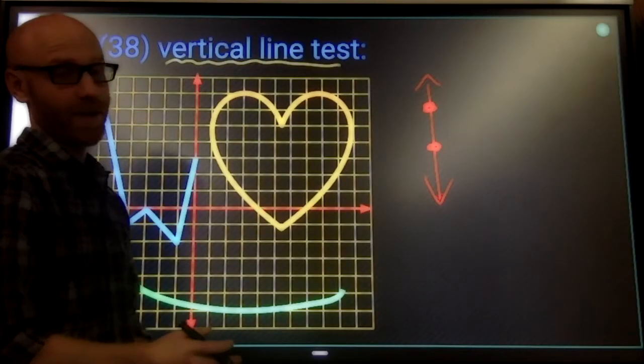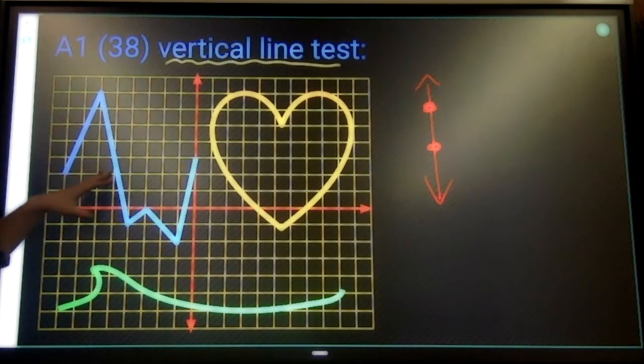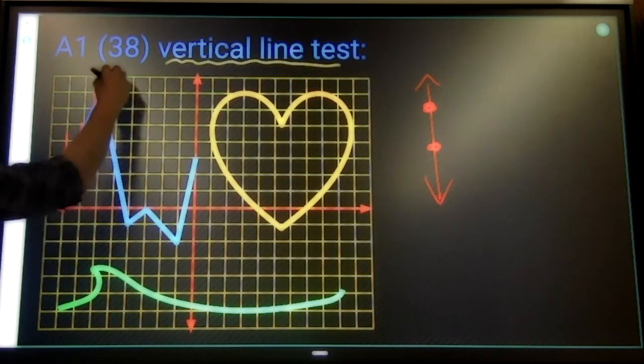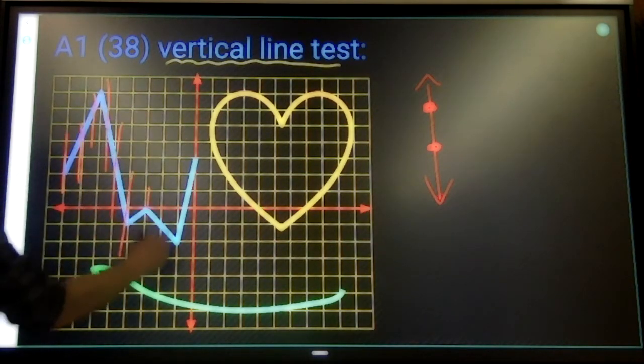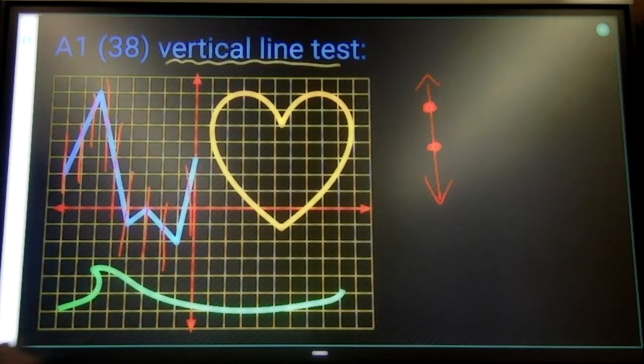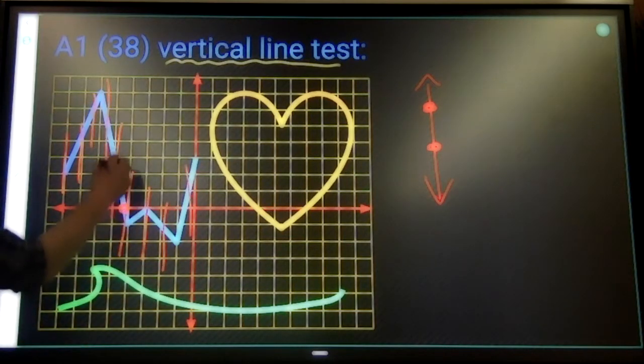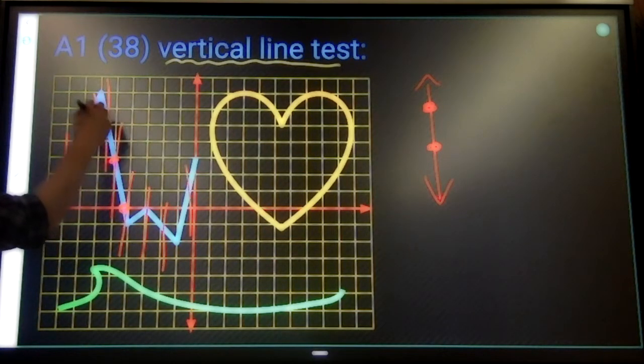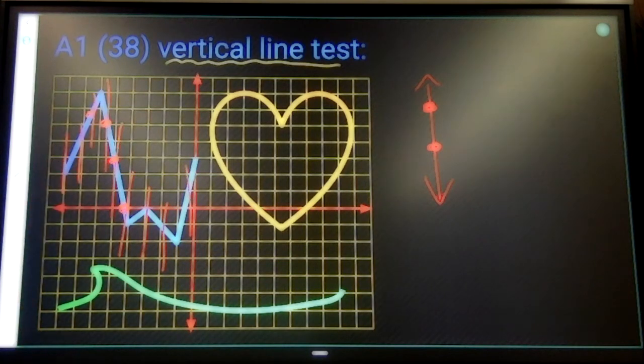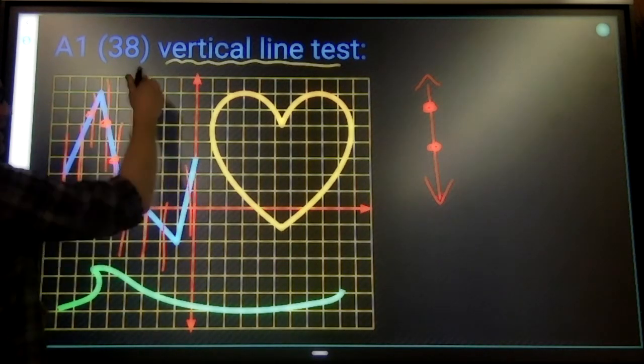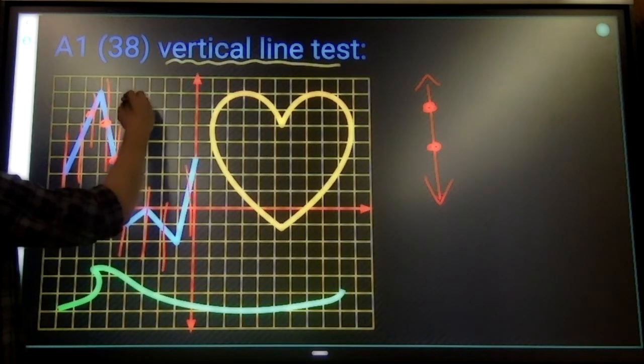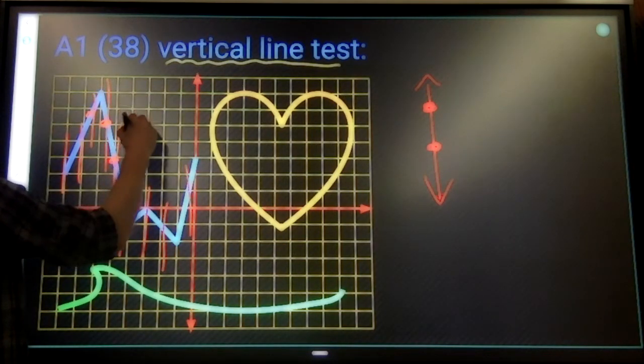So this is how that looks. This blue guy right here, if I draw lines straight up and down anywhere along the blue guy, they only ever cross at one point. And so that means this blue dashed relation is a function.